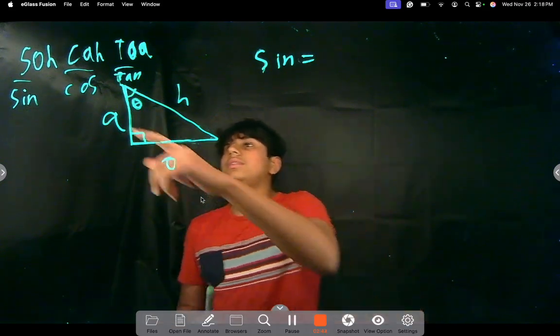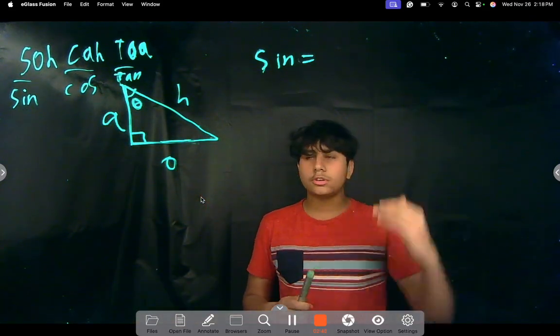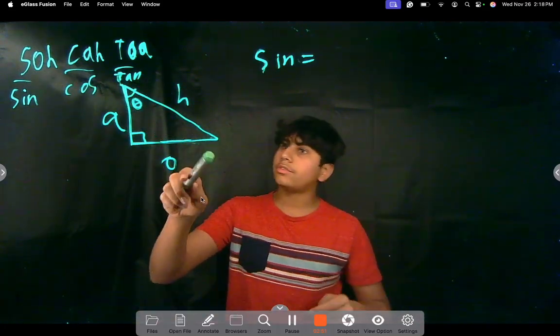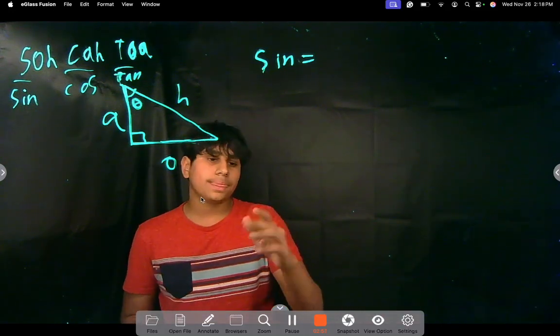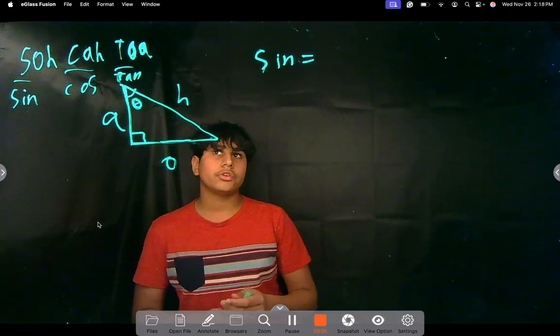And this, basically, in order, it shows what the numerator and denominator is. So, for sine, it's O over H. Opposite over hypotenuse. For cosine, it's adjacent over hypotenuse. And for tangent, it's opposite over adjacent.